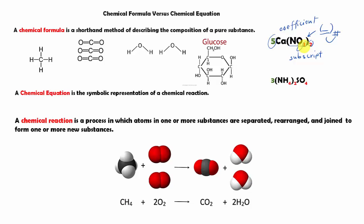In this lesson, we are going to look at chemical formulas and how they are used in a chemical equation. A chemical formula is a shorthand method — a method we use to describe the composition, the makeup, of a pure substance. For instance, we have a substance made of one carbon and four hydrogen, and the formula for this substance is CH4.